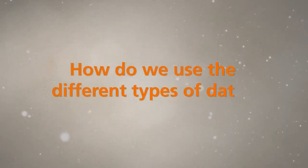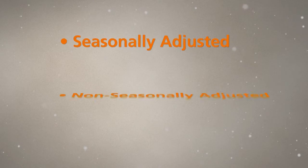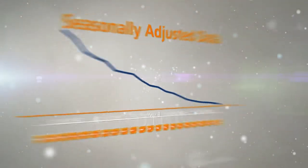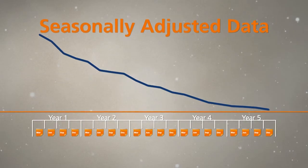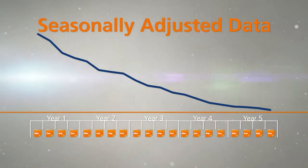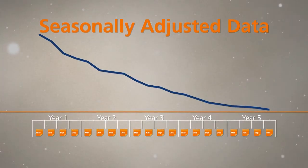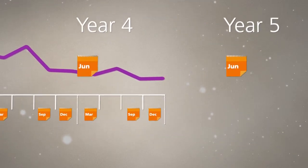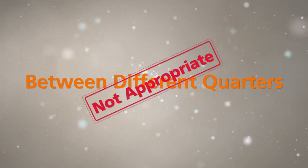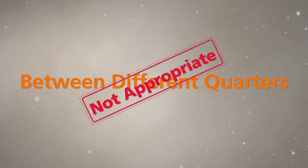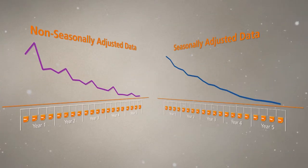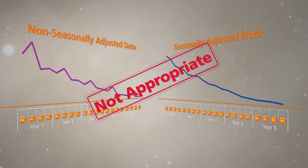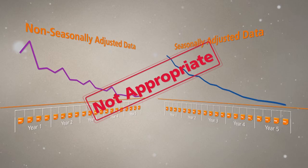So how do we use the different types of data? Seasonally adjusted data are what people generally look at to get the trend movement from quarter to quarter. When comparing non-adjusted unemployment data, it is more appropriate to make comparisons between the same period across years. It would not be appropriate to compare non-adjusted unemployment data between quarters, nor to compare non-adjusted data for one quarter with seasonally adjusted data for another quarter.